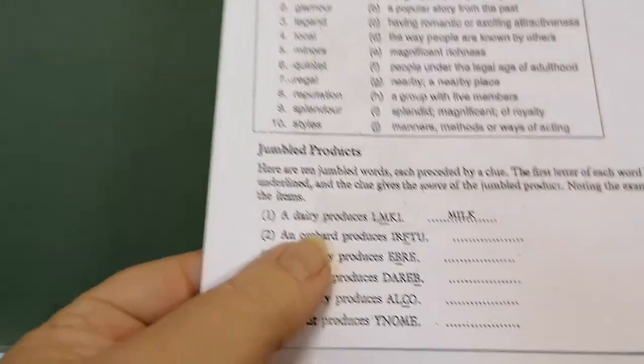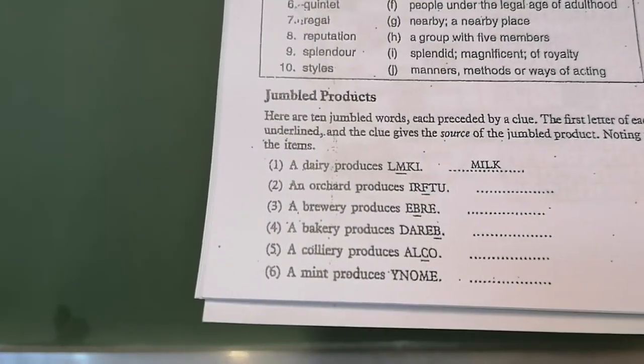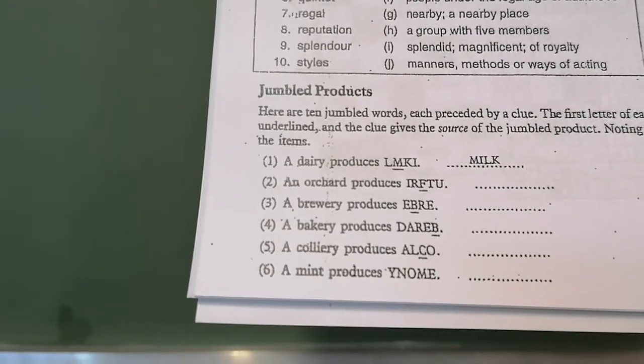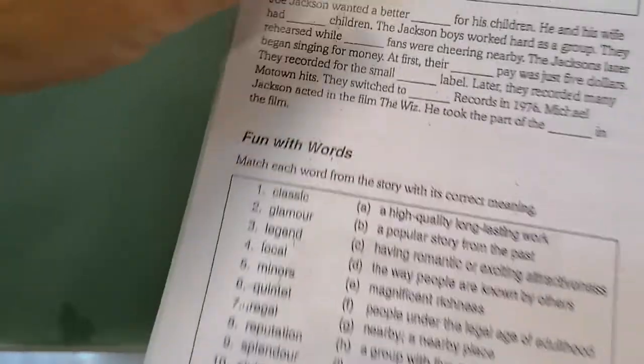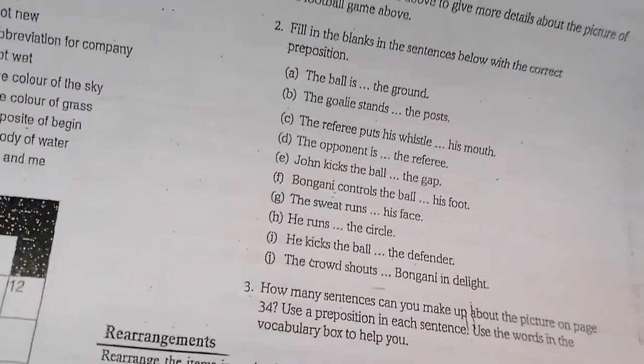Unit 3, Jumbo Products, down here is always a favourite. Dairy produces milk. And Orchard produces fruit. And so you can go on with it. There's a lovely crossword puzzle, it's so easy. Prepositions for you. Come on, there's a word search down here.